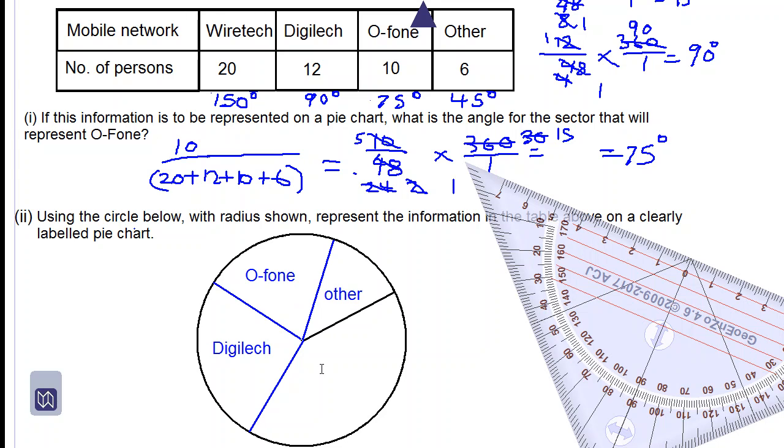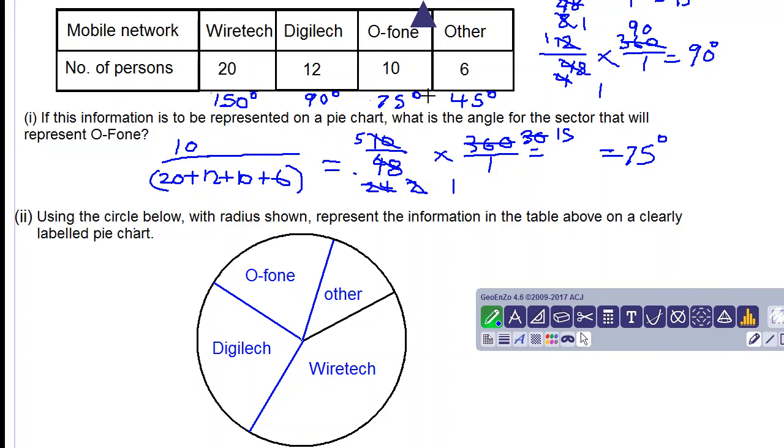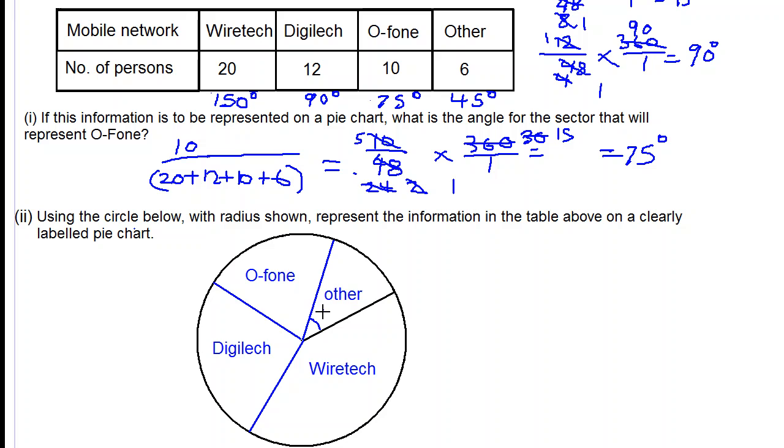So we assume that the last sector represents Wiretech. So let's put in our angles. Other has an angle of 45 degrees. O-fone has an angle of 75 degrees. Digilect has an angle of 90 degrees, so you can represent that with a square. And Wiretech has an angle of 150 degrees.